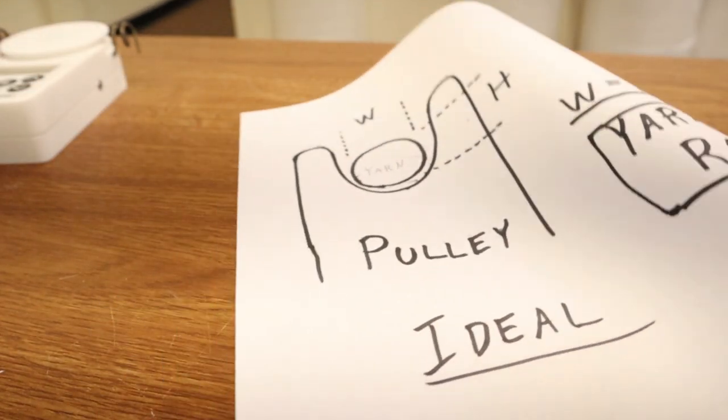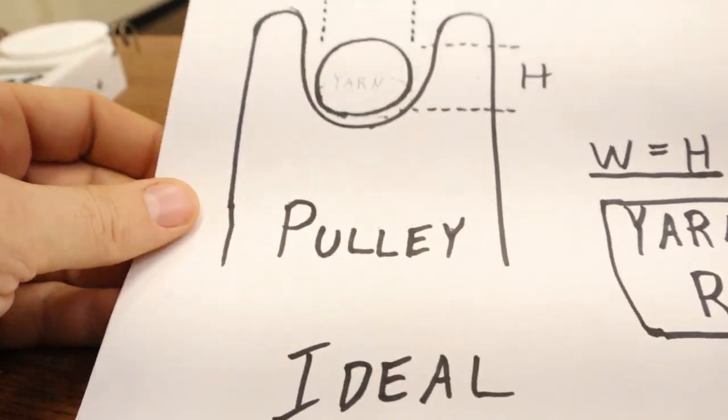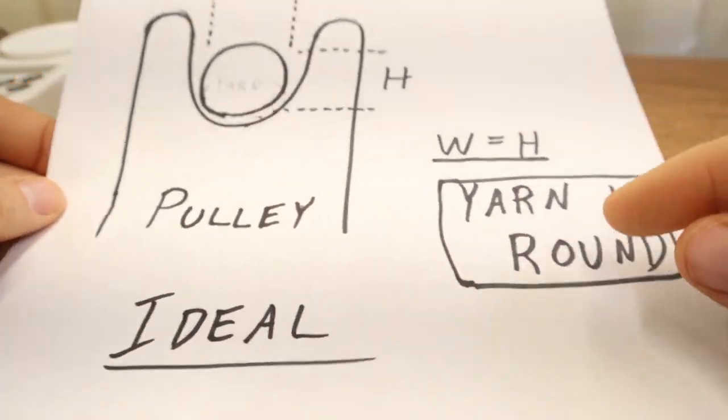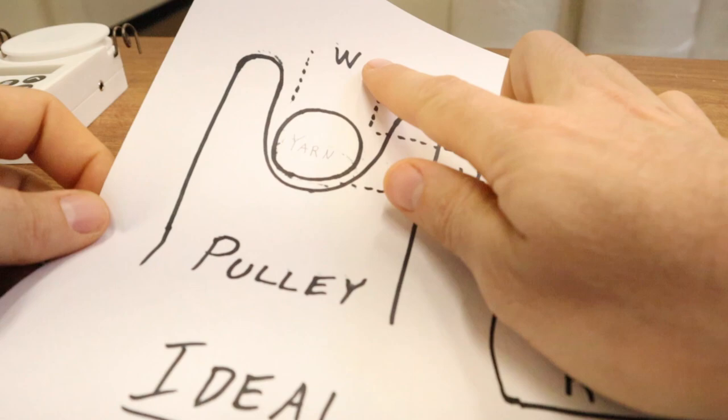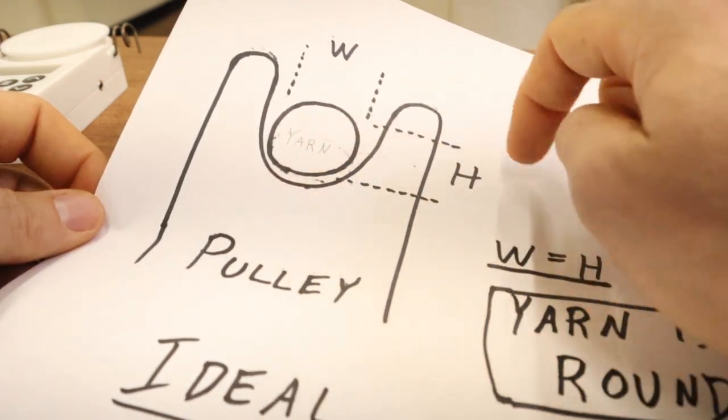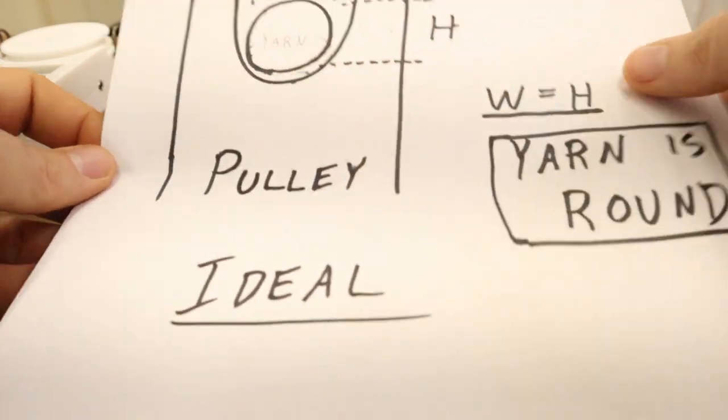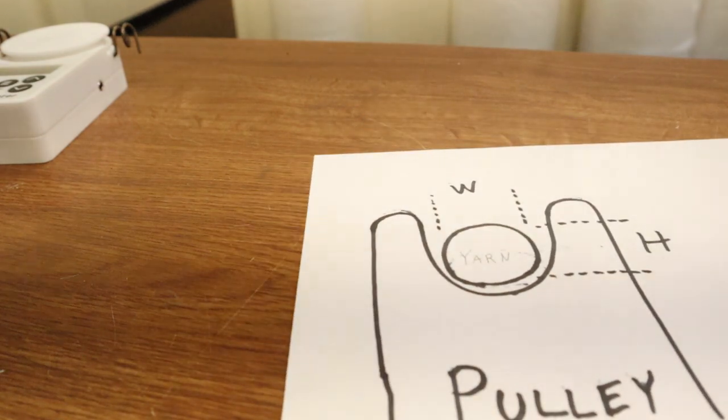But before I get into that, I want to talk about another problem that does definitely affect everything. And that's how the yarn gets squished. So this is sort of ideal. In this case, your width and height of the yarn is the same because it's a perfect circle. However, that's not actually how a yarn counter is going to work.